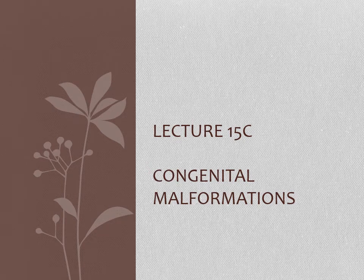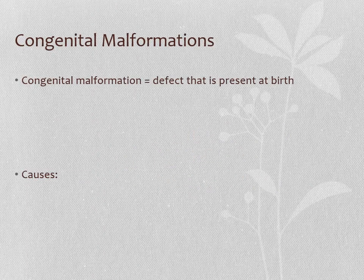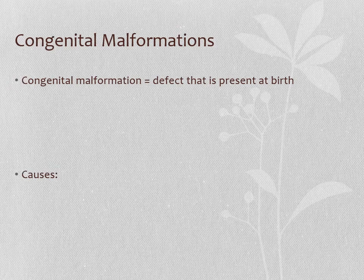Part 3 of lecture 15 is about when things go wrong — we're going to talk about congenital malformations. The word is a bit strange because you might think congenital means having to do with genetics, but the true definition of a congenital malformation is a defect or abnormality that's present at birth, regardless of the cause. It's just something that's already there when you're born — essentially a birth defect.